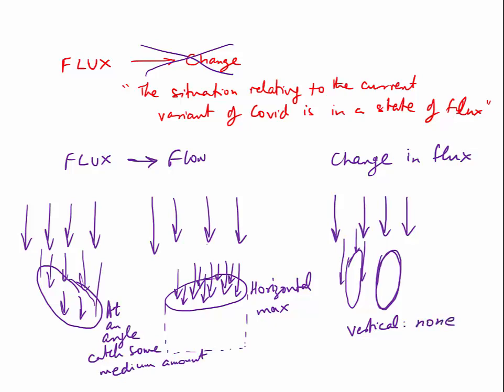In physics, when we talk about magnetic field, this is the flux we're talking about. Instead of rain, we have magnetic field lines going through a current loop, and we discuss how much of the magnetic field in totality is going through the loop. If the magnetic field is coming out of the page and the loop is lying flat, it catches field lines. But if you turn the loop 90 degrees to vertical, it catches none. At an angle, it catches some.